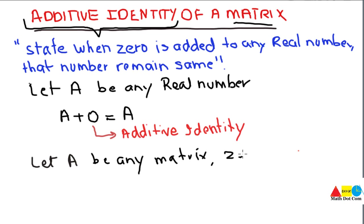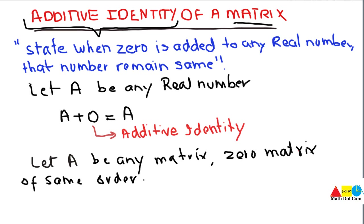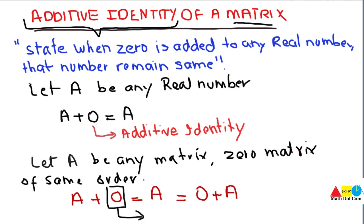The zero matrix must be of the same order as matrix A, meaning they must have the same number of rows and columns. Mathematically, when we add a matrix with a zero matrix, we must get the matrix as it is. This means the zero matrix is the additive identity of a matrix, just as zero is the additive identity in real numbers.